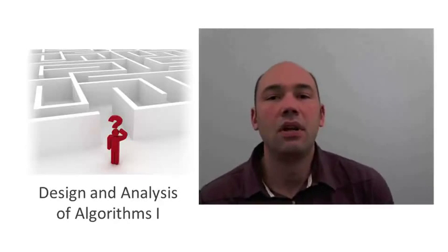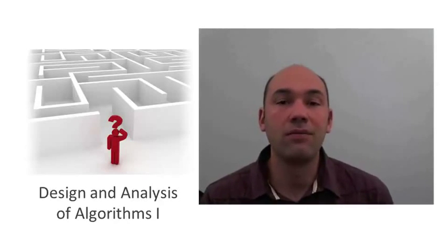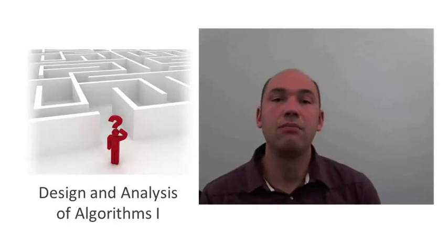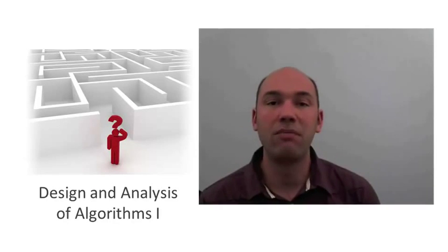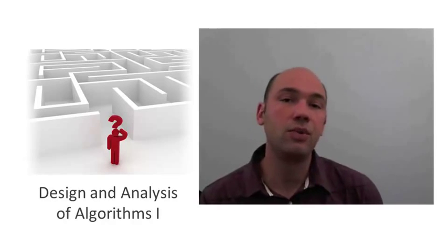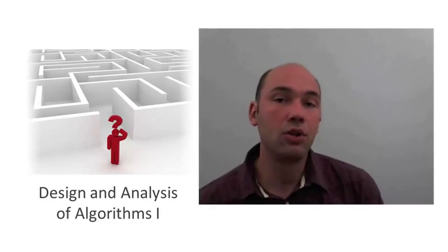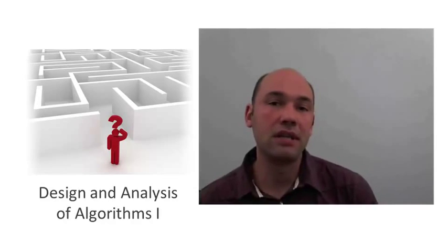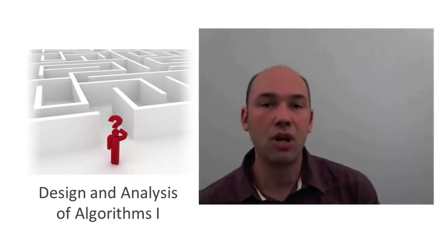In this video and the next we're going to study a very cool divide and conquer algorithm for the closest pair problem. This is a problem where you're given endpoints in the plane and you want to figure out which pair of points are closest to each other. This will be the first taste we get of an application in computational geometry, which is the part of algorithms which studies how to reason and manipulate geometric objects.